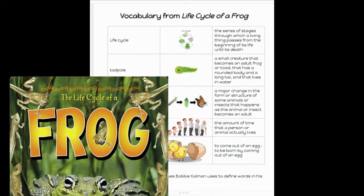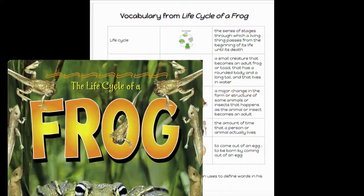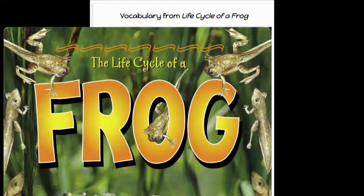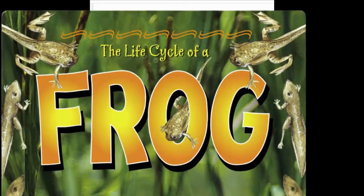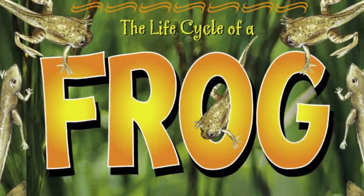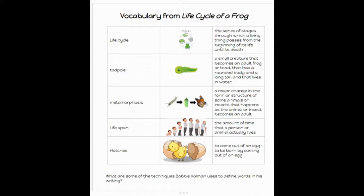Let's take a look at some vocabulary that we are going to see in this excerpt from Bobby Kalman's Life Cycle of a Frog. Life Cycle: the series of stages through which a living thing passes from the beginning of its life until its death.